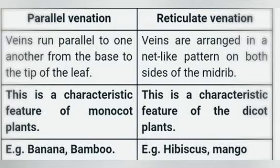Parallel venation is the main characteristic of monocots, whereas reticulate venation is seen in dicots. Examples for parallel venation are banana and bamboo. Examples for reticulate venation are hibiscus and mango.